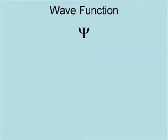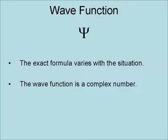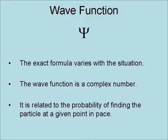The wave function of a particle is denoted by Psi. The exact formula varies with the situation. The wave function is a complex number and is related to the probability of finding the particle at a given point in space.